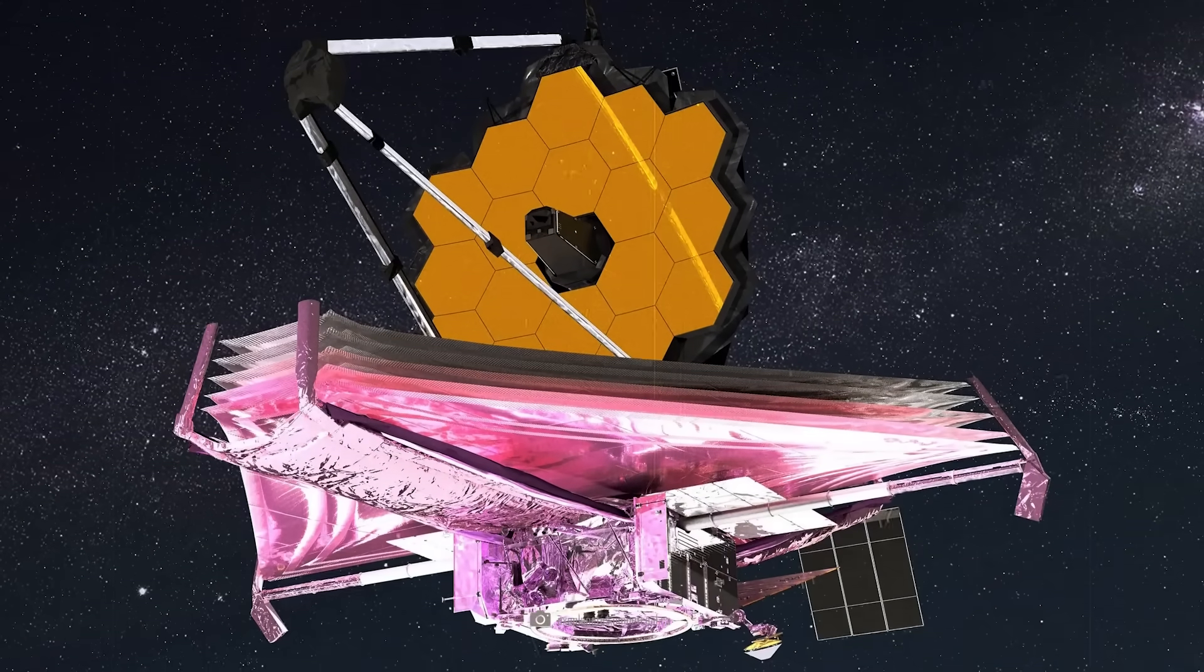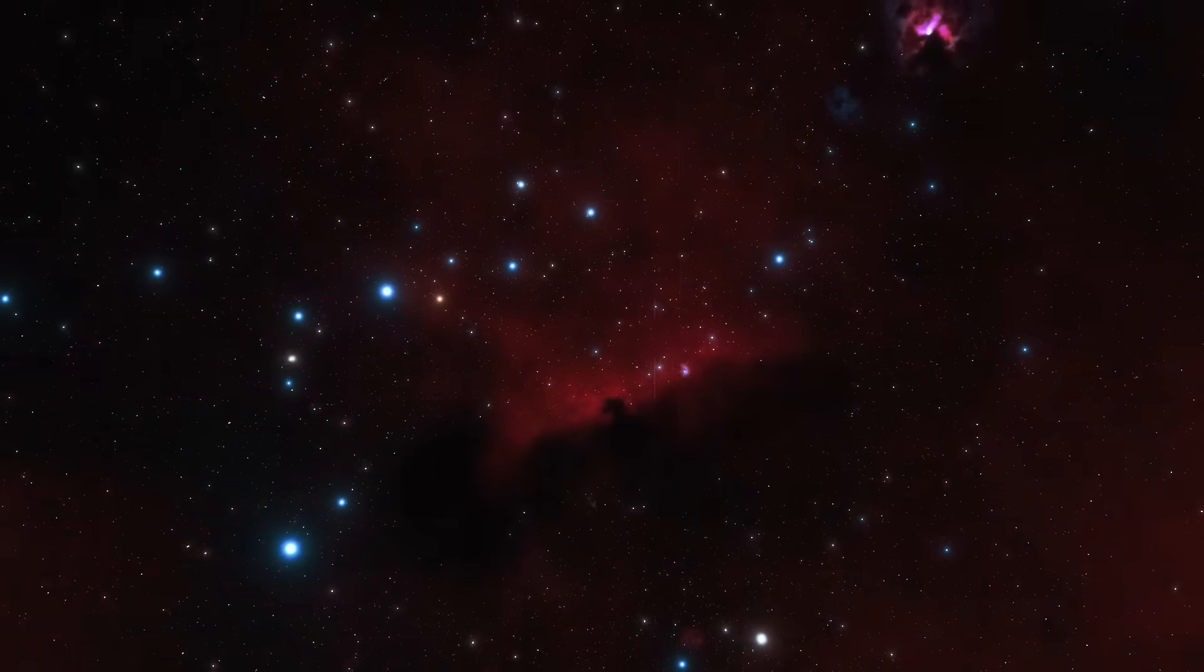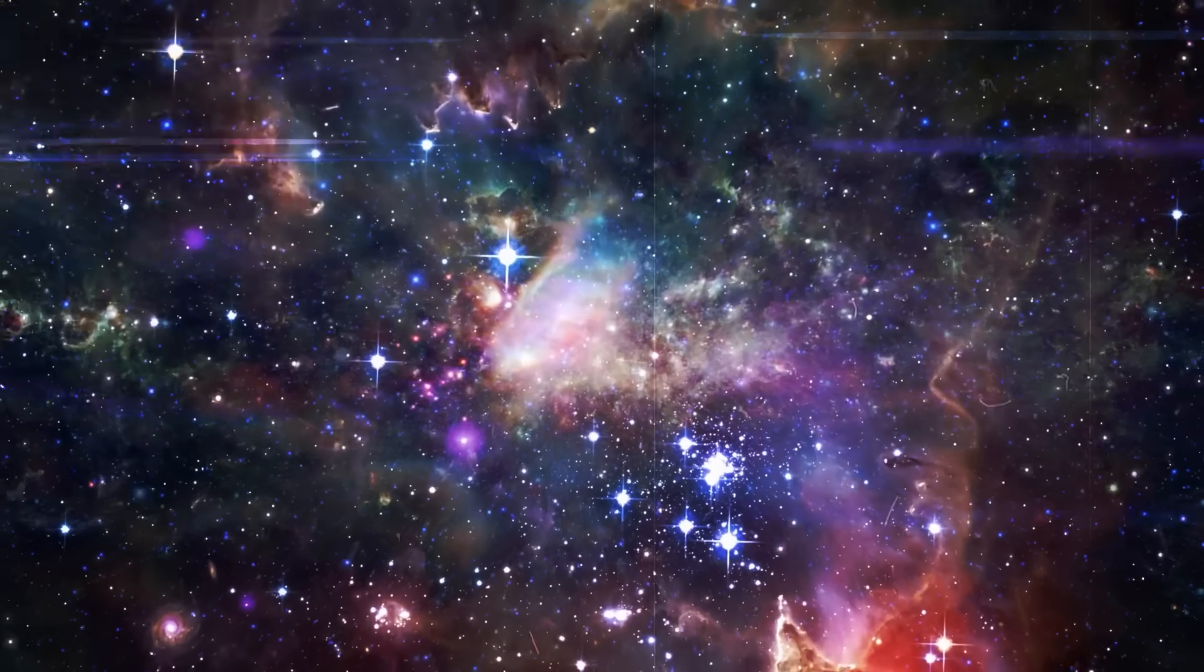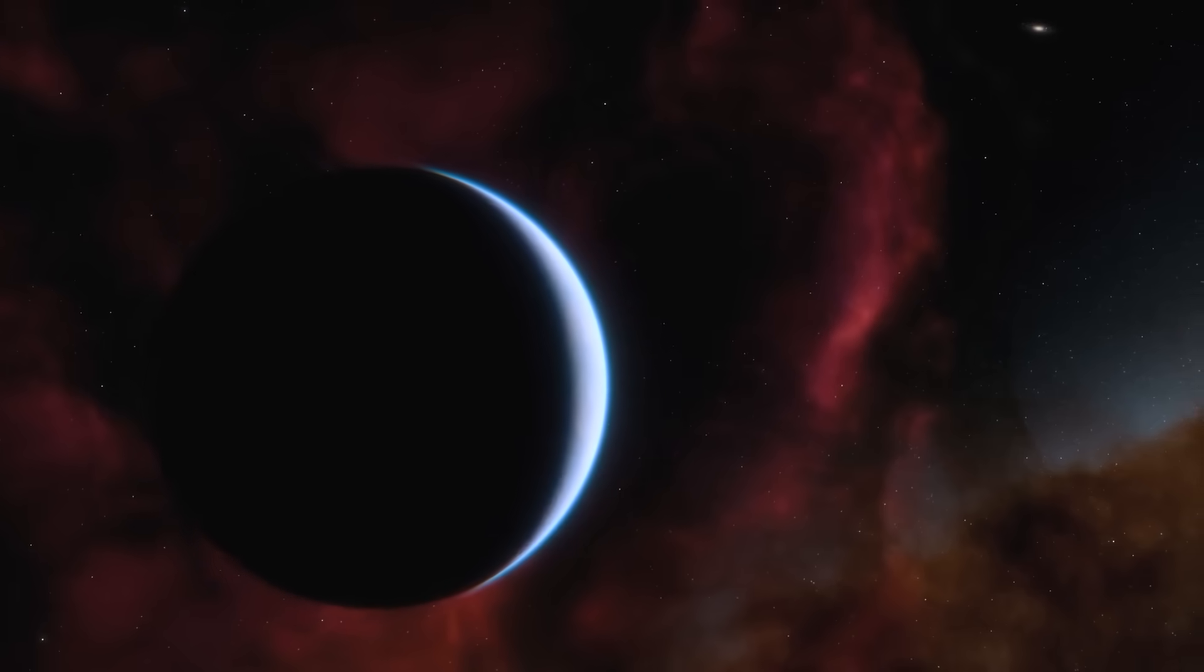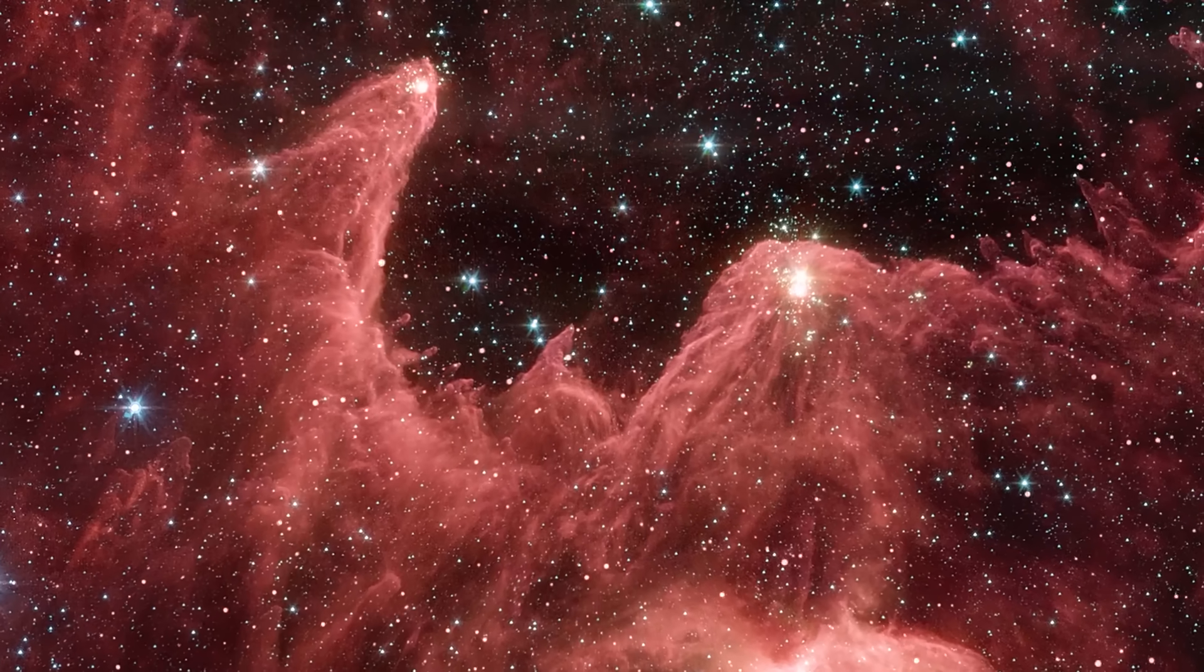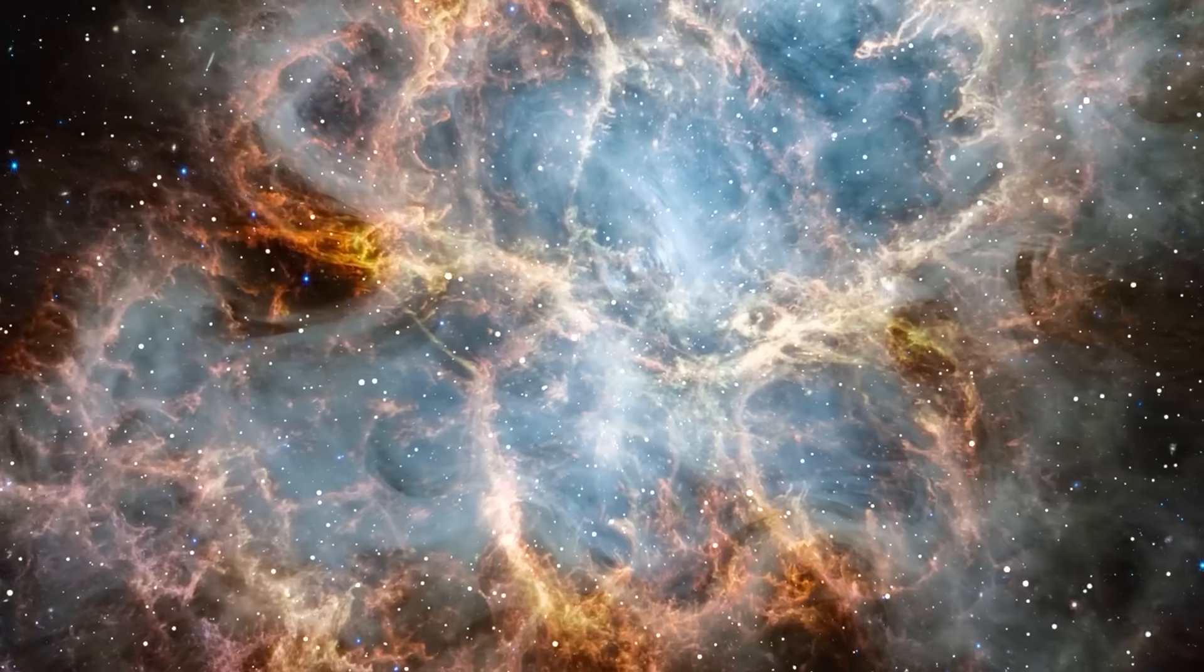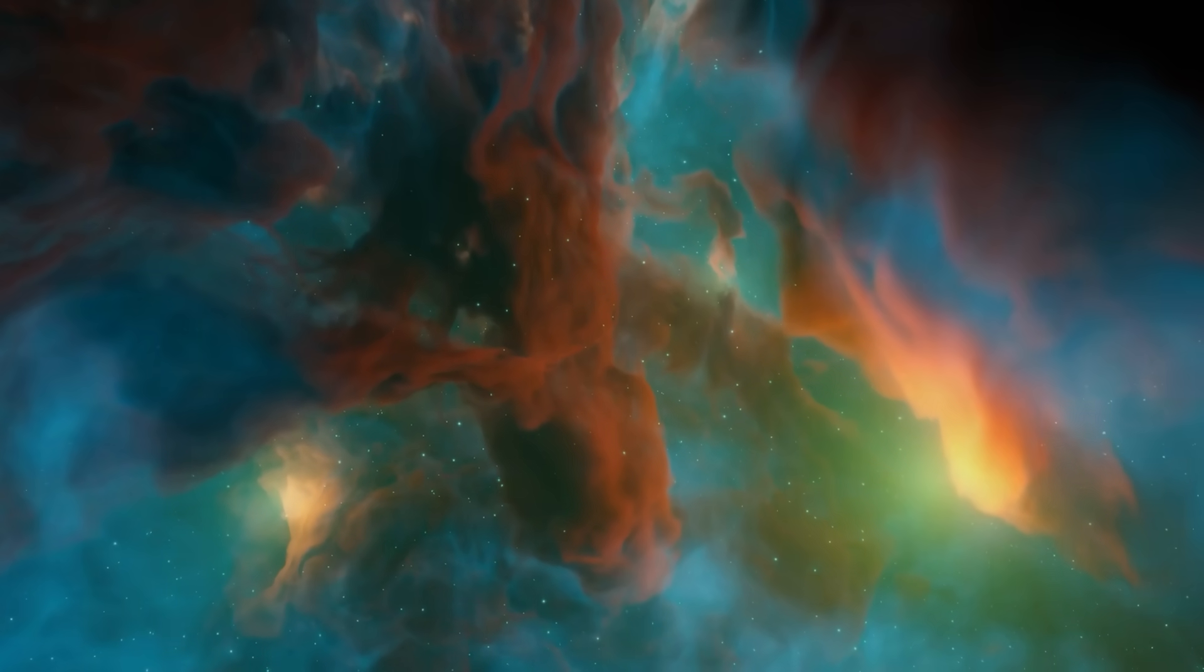The image from the James Webb Telescope shows unusual processes in the cosmos that once again challenge our science. Since the launch of the telescope, not only have our previous theories of the beginning of the Universe been put to the test, now the exoplanets are also going crazy and turning our ideas of physics completely upside down.